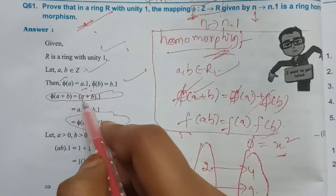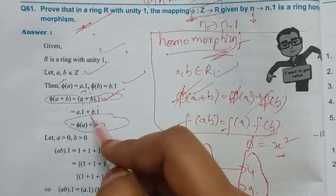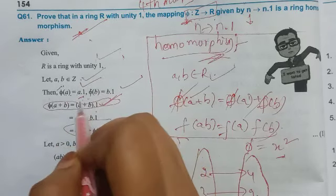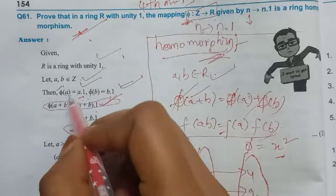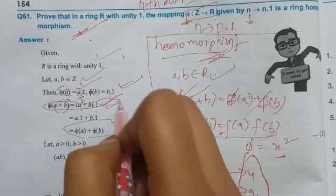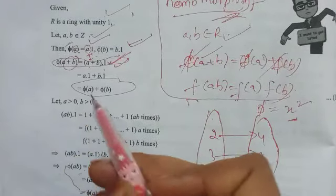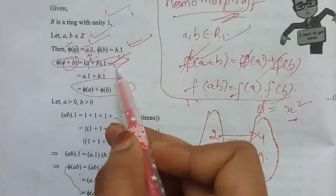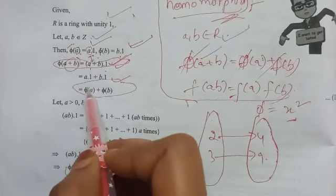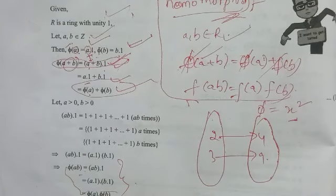Now we will prove phi of (a plus b). Phi of (a plus b) is equal to (a plus b).1, and the same way (a plus b).1 is nothing but a.1 plus b.1, which is nothing but phi of a plus phi of b.